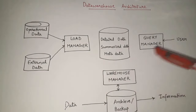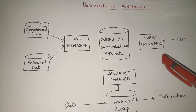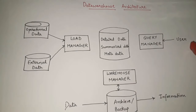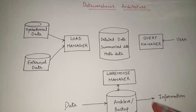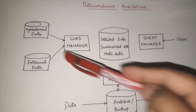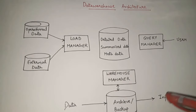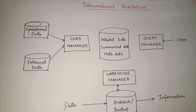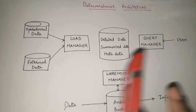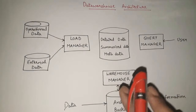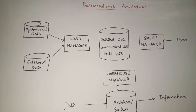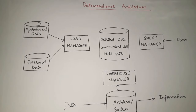So overall, data goes inside the data warehouse, all these components work together, and ultimately the external or third-party user gets quality, useful information from the raw data. That is all about data warehouse architecture. I hope you understood each component well. If you found the video helpful, please like it, share it as much as possible, and if you have not subscribed the channel yet, please subscribe. Thank you so much.